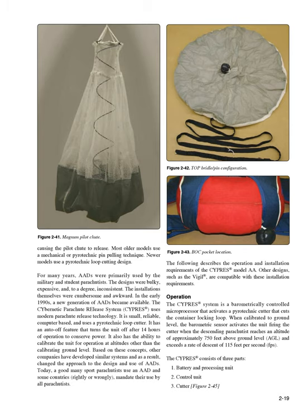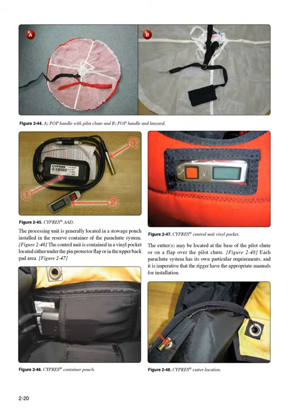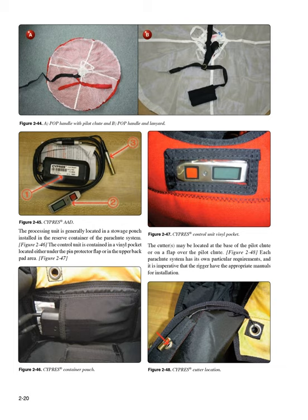The following describes the Cypress Model AA. Other designs, such as the Vigil, are compatible with these installation requirements. The Cypress system is a barometrically controlled microprocessor that activates a pyrotechnic cutter to cut the container locking loop. When calibrated to ground level, the barometric sensor fires the cutter when the descending parachutist reaches approximately 750 feet AGL and exceeds a rate of descent of 115 feet per second. The Cypress consists of three parts: the battery and processing unit, the control unit, and the cutter. The processing unit is located in a stowage pouch in the reserve container. The control unit is in a vinyl pocket located either under the pin protector flap or in the upper back pad area. The cutters may be located at the base of the pilot chute or on a flap over the pilot chute. Each parachute system has its own particular requirements, and it is imperative that the rigger have the appropriate manuals for installation.